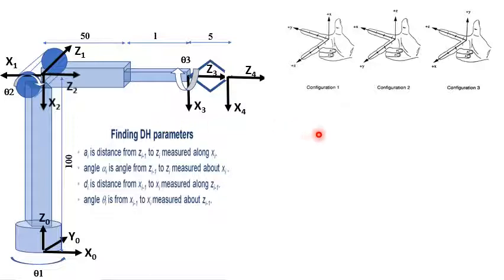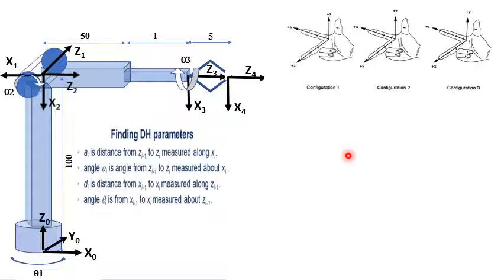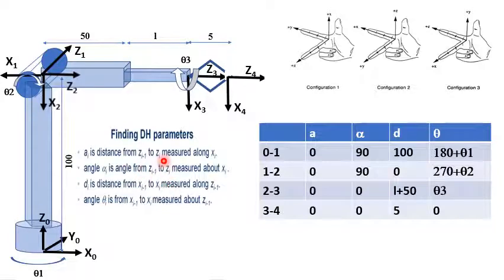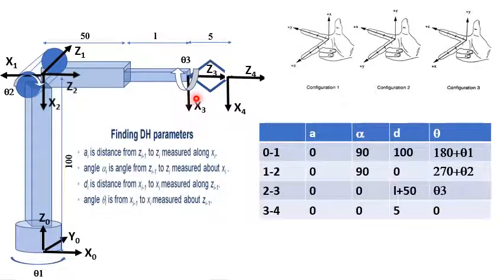Now we are ready for the DH table. The parameter 'a' is zero for all rows — from joint 0 to 1, 1 to 2, 2 to 3, and 3 to 4. This is because 'a' represents the shift from Z(i-1) to Zi along Xi, and there is no such shift in any of these cases.